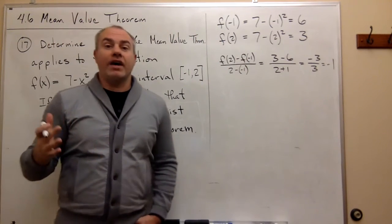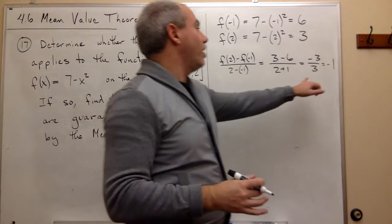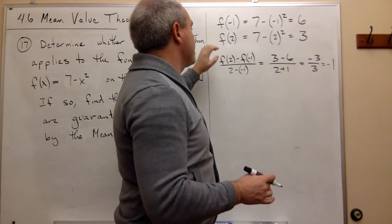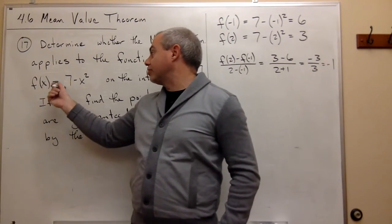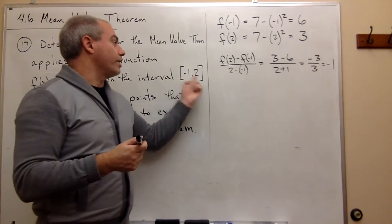So what the mean value theorem guarantees me is that since the slope of the secant line between these two points is negative 1, then there must be somewhere where the derivative of this function is equal to negative 1 in between negative 1 and 2.